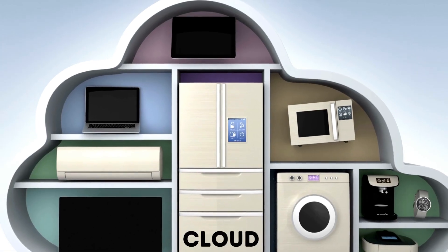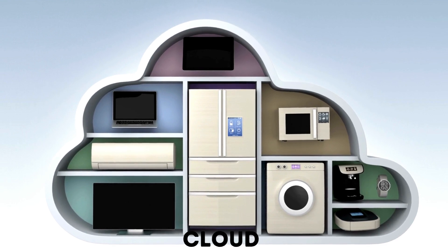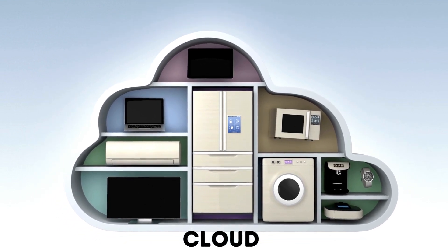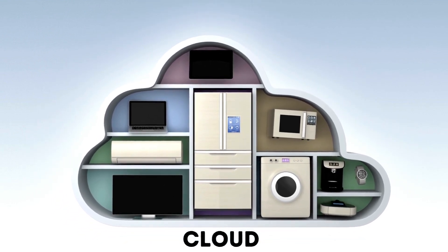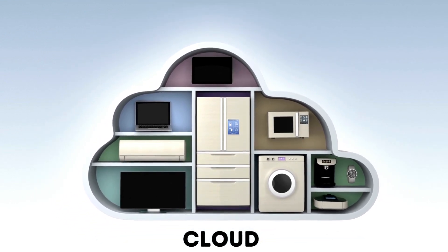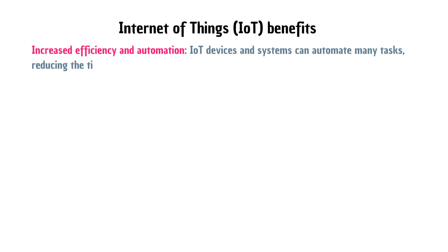Finally, the cloud service layer includes host IoT applications that collect and analyze data. The Internet of Things has several benefits, including increased efficiency in automation. IoT devices and systems can automate many tasks, reducing the time and effort required to complete them.